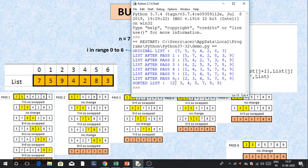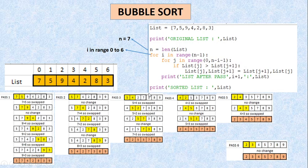Basically, pass 5 पे list sort out हो चुकी थी, लेकिन still मेरा pass 6 run किया — and this is the shortfall of this sorting algorithm। और इसको हमने बाकी sorting algorithms में कैसे overcome किया, वो भी देखेंगे। Bubble Sort में इतना ही — thank you so much।